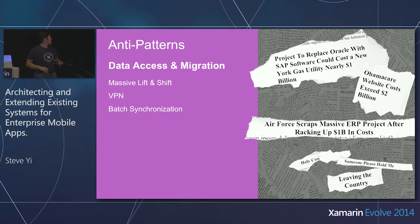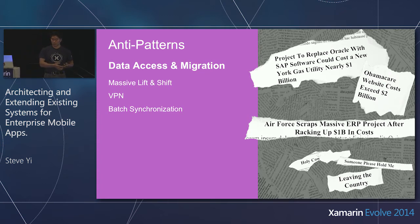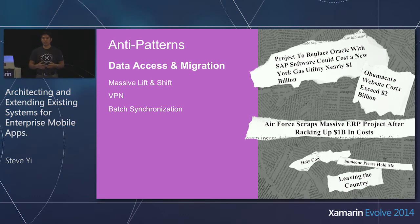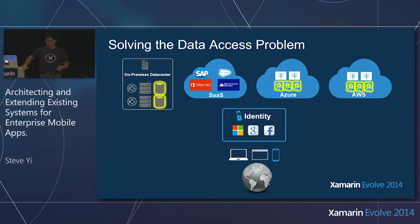That's the first anti-pattern — the massive lift and shift. But if they're going to remain on-premises, how do you get that data to your mobile device? A VPN? You can use a VPN, but in my opinion it completely destroys the user experience and creates configuration, deployment, and update issues. Utilizing a secure identity solution makes more sense. What about moving data up into the cloud with batch synchronizations on a daily basis or every 12 hours? That's a bad idea — data inconsistencies and things of that nature. So how do we get on-premises data synchronously to a mobile device?